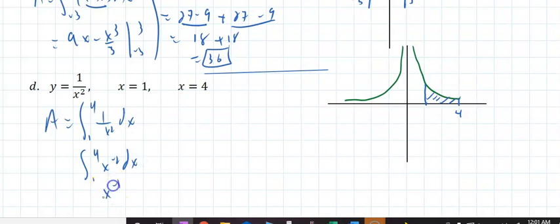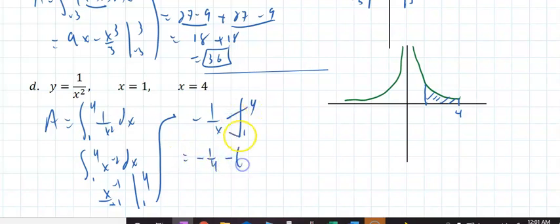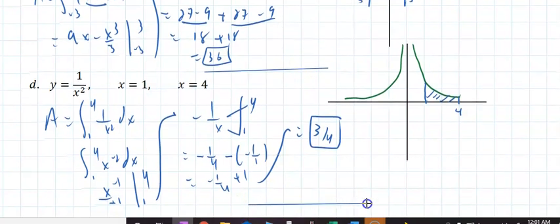Add 1 to the power, divide by that. That is -1/x evaluated from 1 to 4. That is -1/4 minus -1/1. That turns out to be 3/4 square units, whatever the units are, if they ever provide that. And that's pretty much it.